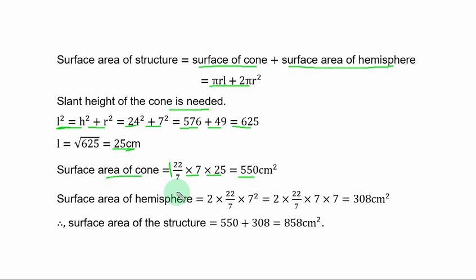Surface area of hemisphere is equal to 2 times 22 over 7 for pi times 7 squared. That is for radius, you have it in this form. 7 cancel 7. If you multiply 2 by 22 by 7, you have 308 square centimeters.